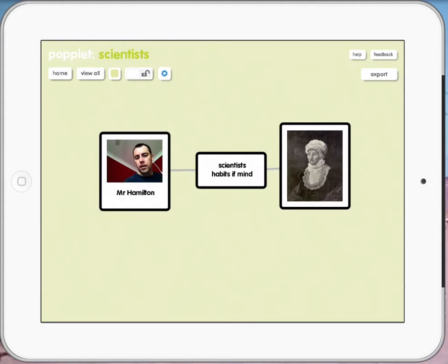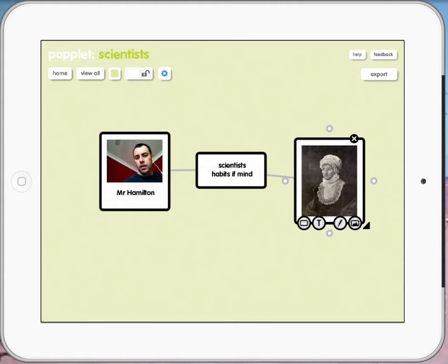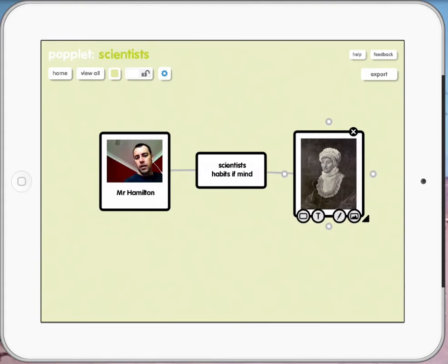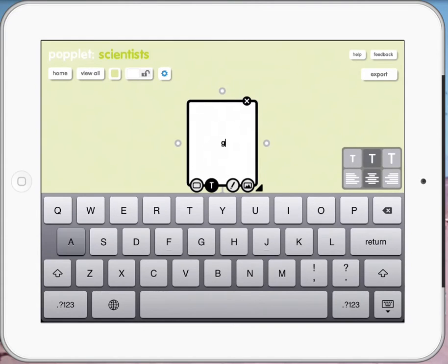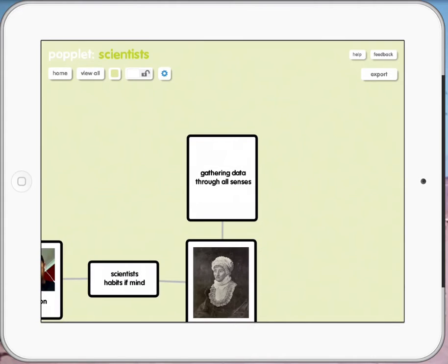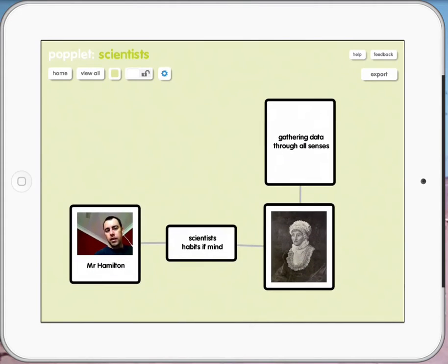And what we're going to do is our year three students are going to start making some connections between the habits of mind. So one of the habits that I know that Caroline Herschel used was, and I'll do a little branch off here, is that she definitely used gathering data through all senses. I know this for sure because she wouldn't be able to do what she did if she didn't use that skill.